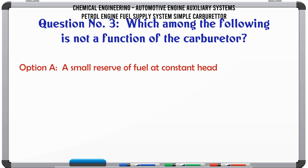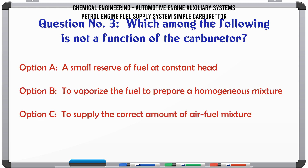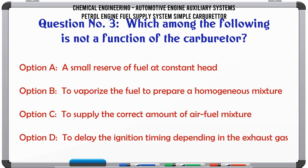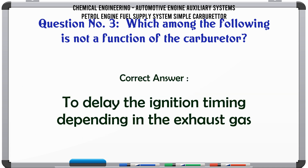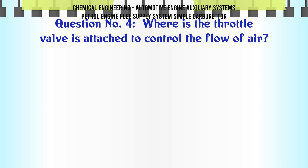Which among the following is not a function of the carburetor? A. A small reserve of fuel at constant head. B. To vaporize the fuel to prepare a homogeneous mixture. C. To supply the correct amount of air-fuel mixture. D. To delay the ignition timing depending on the exhaust gas. The correct answer is: to delay the ignition timing depending on the exhaust gas.